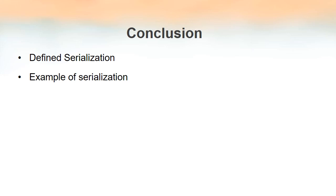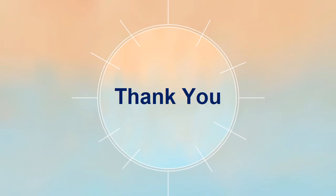In this video lecture, we defined serialization, we came across how to perform it, and some keywords related to serialization such as transient and SerialVersionUID. We also mentioned about deserialization and how to prevent serialization of certain members or variables in a class. That is all in this video lecture. Thank you so much.